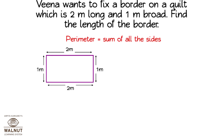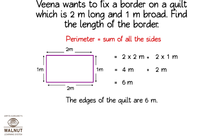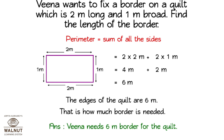Perimeter is equal to sum of all the sides, which is equal to 2 into 2 meters plus 2 into 1 meter, which is equal to 4 meters plus 2 meters, which is equal to 6 meters. The edges of the quilt are 6 meters — that is how much border is needed. Veena needs 6 meters of border for the quilt.